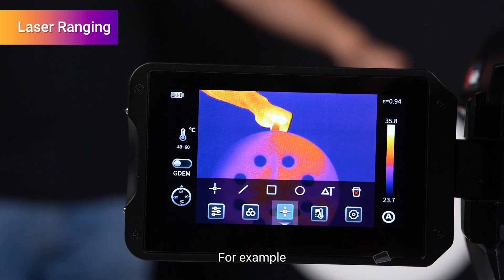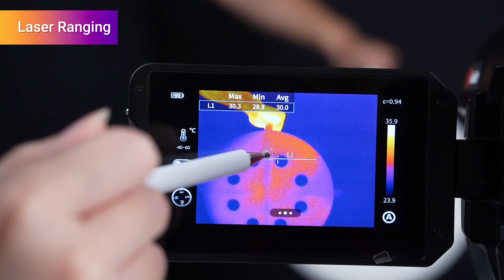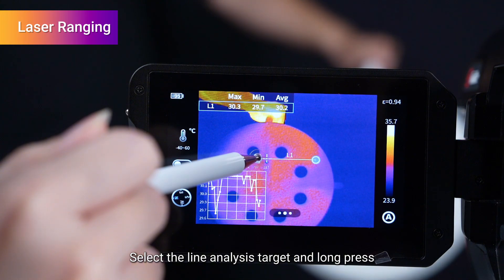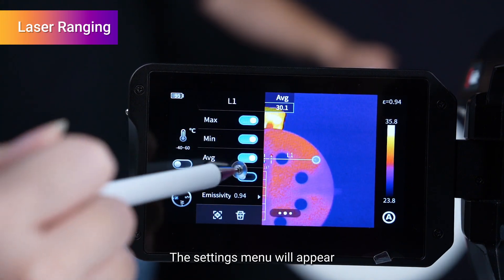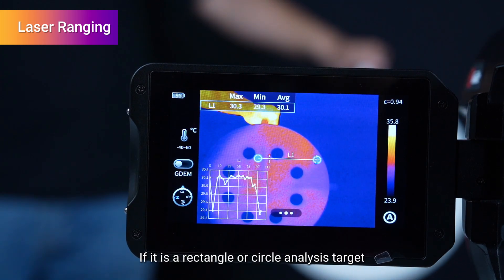For example, to measure the length of a line segment: add a line analysis target, select it, and long press. The settings menu will appear. Turn on the length feature. If it is a rectangle or circle analysis target, long press it.